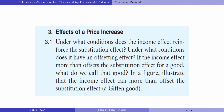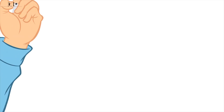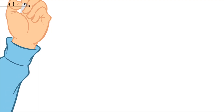Here is Exercise 3.1. Under what conditions does the income effect reinforce the substitution effect? Under what conditions does it have an offsetting effect? If the income effect more than offsets the substitution effect for a good, what do we call that good? In the figure, illustrate that the income effect can more than offset the substitution effect. We can draw the demand curve diagram to show the substitution and income effect, or we can use the Slutsky equation.